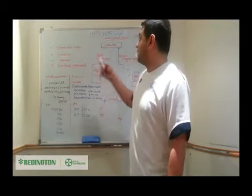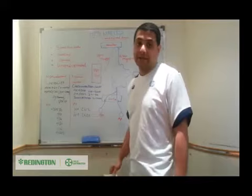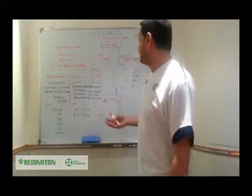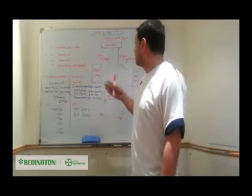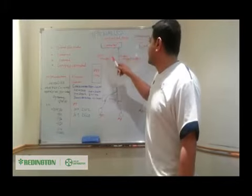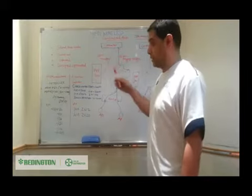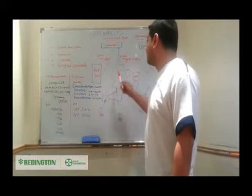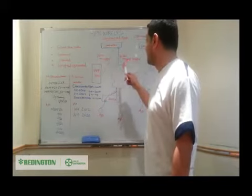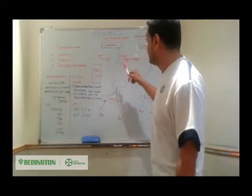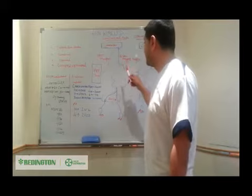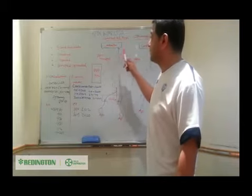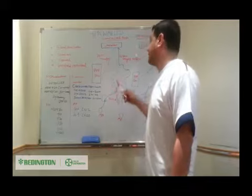That is the reason we moved to an architecture called centralized architecture, wherein we have a controller in the network and access points in the network. The access points are basically controlled by the controller, and whatever updates or orders we need to write, everything is taken care of by the controller. If we want to monitor traffic or update firmware versions, we can schedule it so one access point is updated at a time, ensuring it is working fine before moving to the next.